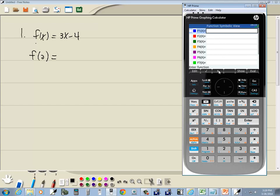I should throw you in function symbolic view, or you can push the symbol button right here if you don't see this. We'll put in our 3x minus 4, press enter.